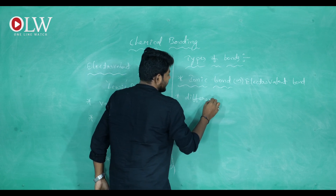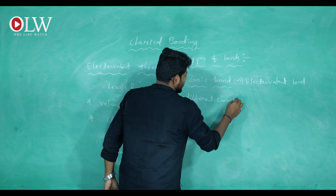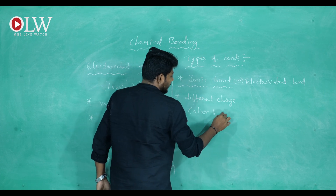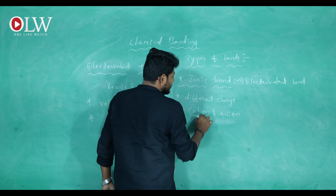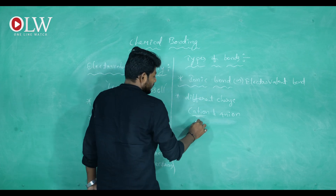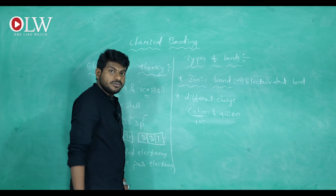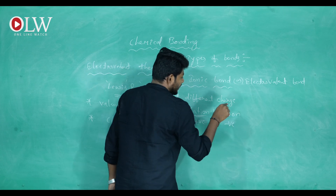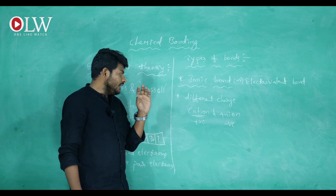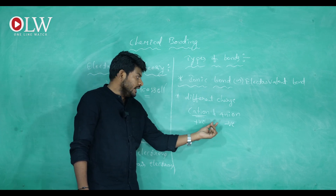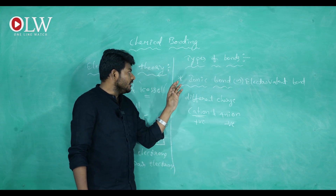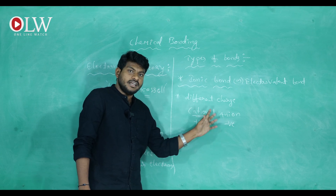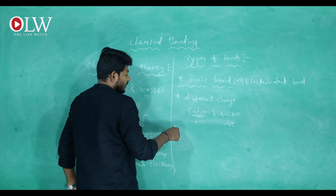Different charges means one element must be a cation and the other must be an anion. Cation is the element that loses electrons — indicated with a positive sign. Anion is the element that gains electrons — represented with a negative sign. So, the two elements involved in an ionic bond must be one cation and one anion. This is the first rule.